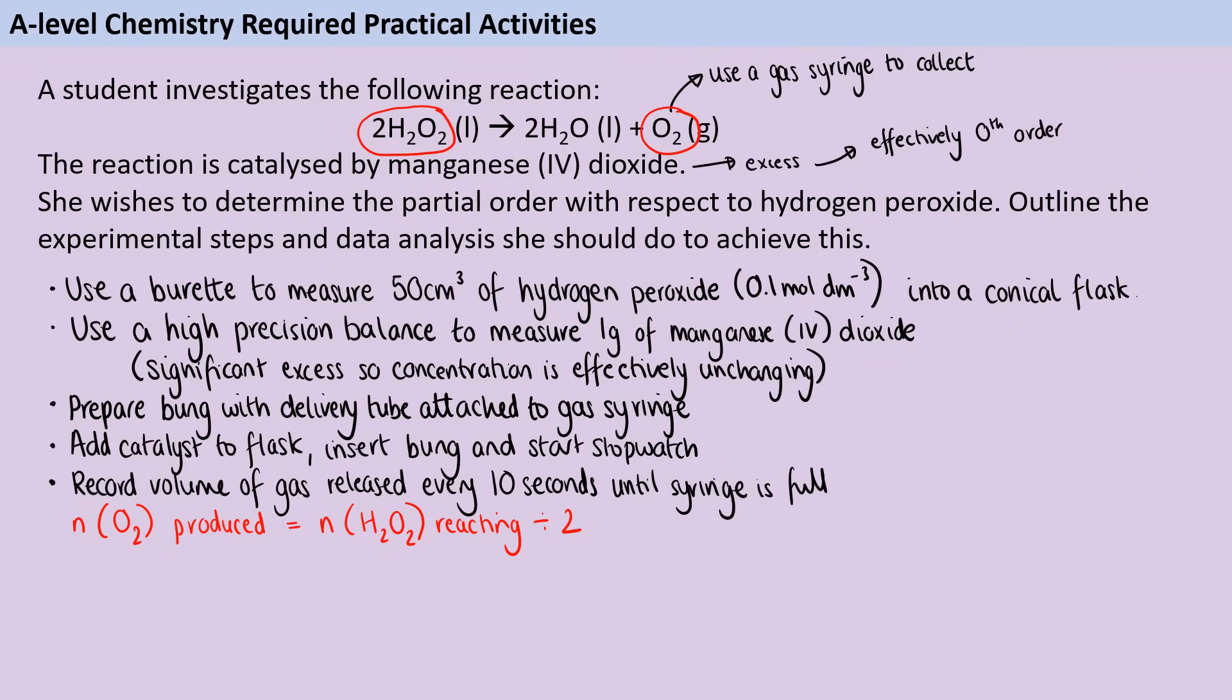So say you figure out, there's been 10 centimeters cubed of gas evolved. That's this many moles of oxygen has been produced. Therefore, this many moles of hydrogen peroxide have been used up. So originally I had this many moles in solution. Now I've got this many moles have been used up. So how many moles are left over? Therefore, what's the new concentration? And when you've done all of that, that allows you to calculate your concentration of hydrogen peroxide for each of the time points that you've got.